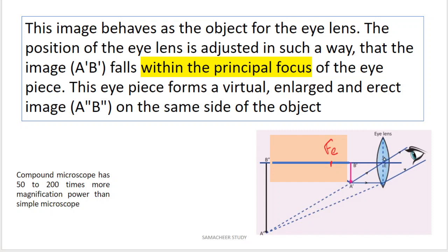The final image is on the same side of the object. That is A double dash, B double dash — the final magnified virtual image formed by the eye lens.